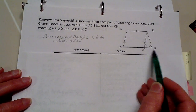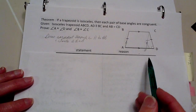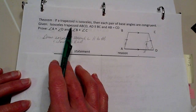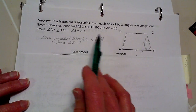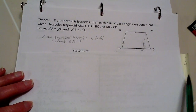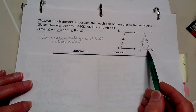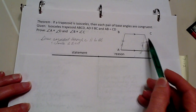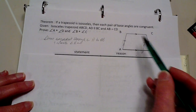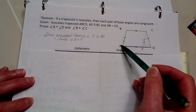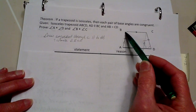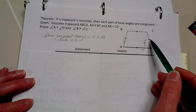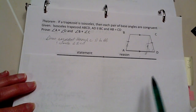The base angles in this case would be A and D. We have the given: isosceles trapezoid ABCD, with AD parallel to BC, which is normal for a trapezoid. And in this case, being isosceles, AB and CD are congruent.